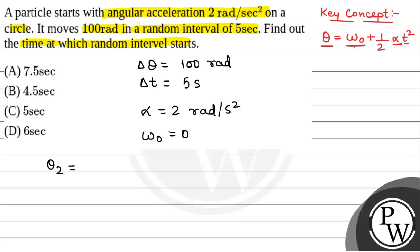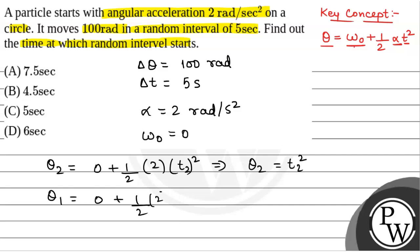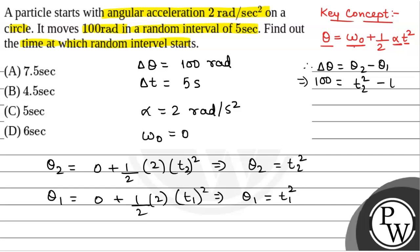We write theta-2 equal to zero plus half into alpha into t2 squared, which gives theta-2 equal to t2 squared. Similarly, theta-1 equals half into alpha into t1 squared, giving theta-1 equal to t1 squared. Therefore, delta theta equals theta-2 minus theta-1, so 100 radians equals t2 squared minus t1 squared.